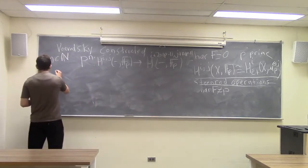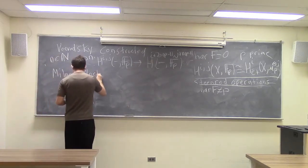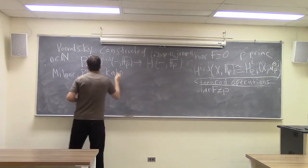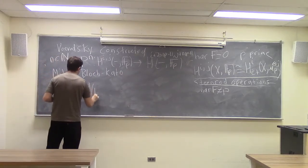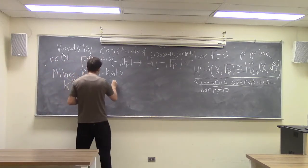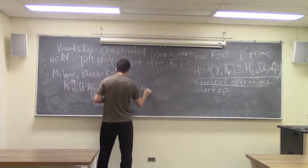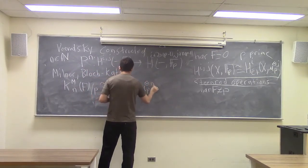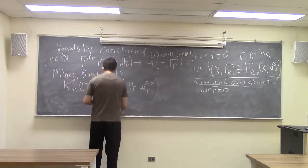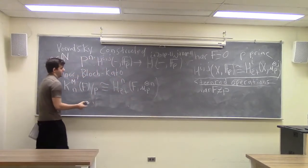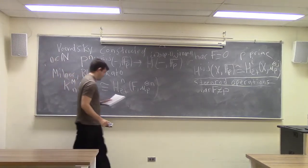These operations were most famously used by Voevodsky to prove the Milnor and Bloch-Kato conjecture, which states that there's an isomorphism from the Milnor K-theory of your base field mod P to the étale cohomology. The case where P equals 2 is Milnor, and P bigger than 2 is Bloch-Kato. This gives you information about the étale cohomology, which has simpler properties.